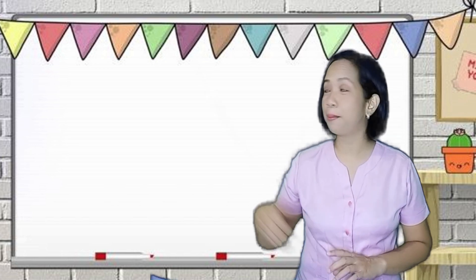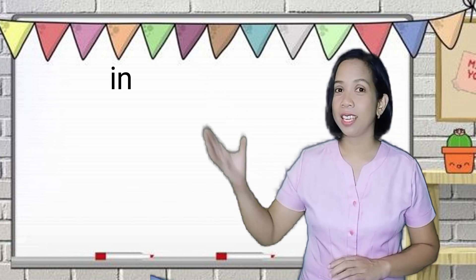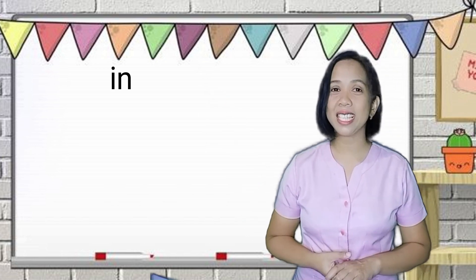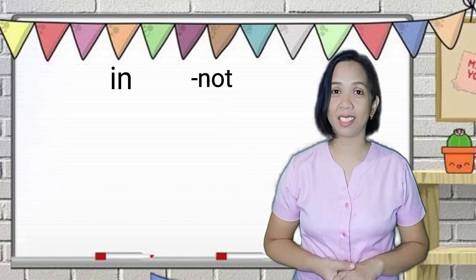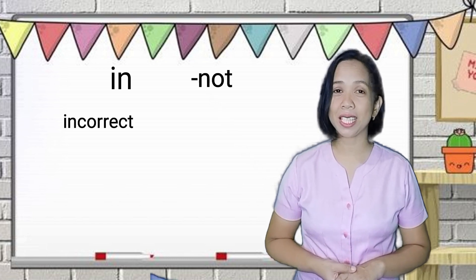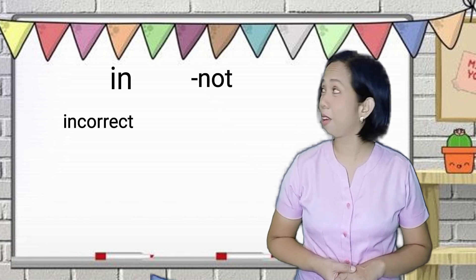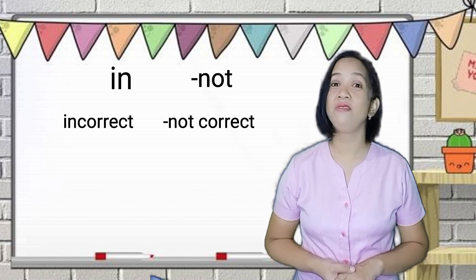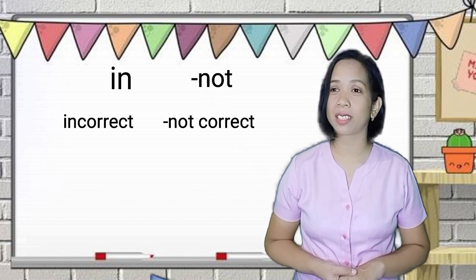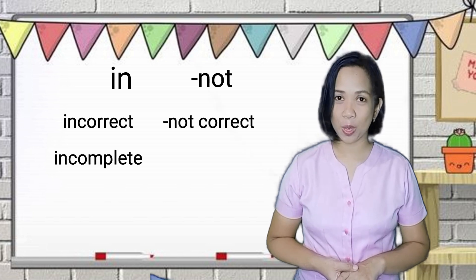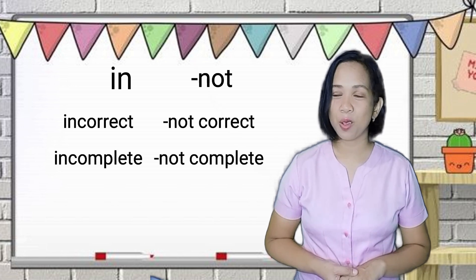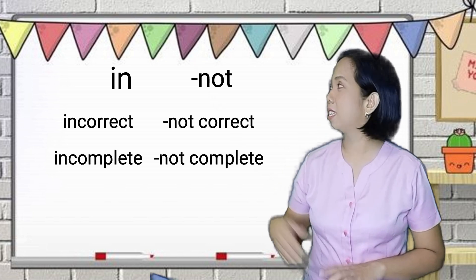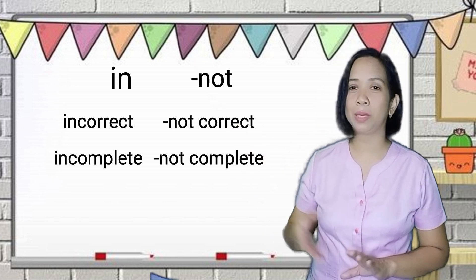First, we have the prefix in. In means not. Examples: incorrect, which means not correct; incomplete, which means not complete.